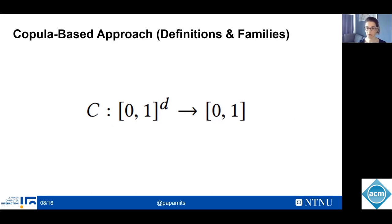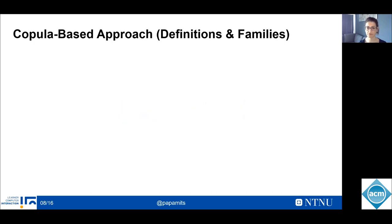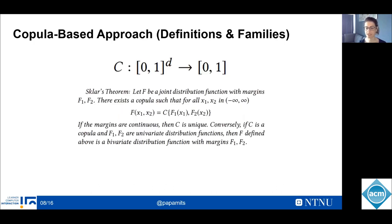So here we adopted a copula-based approach. The idea behind the concept of copulas is to separate the joint distribution function into the dependent structure and the marginal behavior. In a sense, copulas are functions that couple the marginal distributions to the corresponding joint distribution functions. The theoretical foundation is provided in Sklar's theorem, which claims that any multivariate joint distribution can be written in terms of univariate marginal distribution functions and a copula function that describes the dependent structure between the variables.